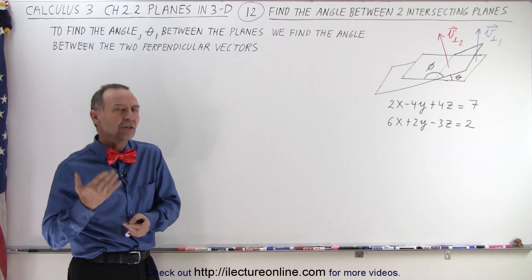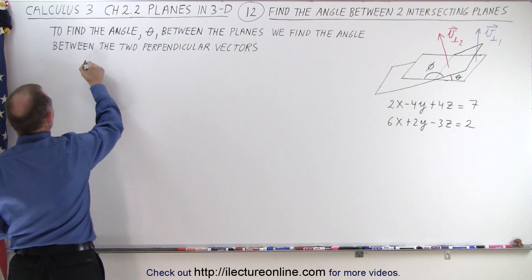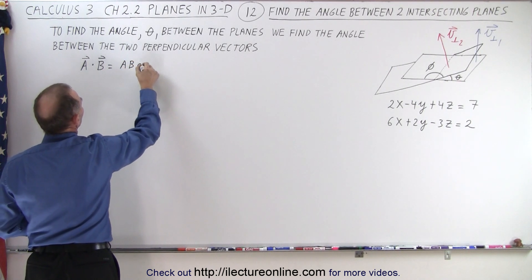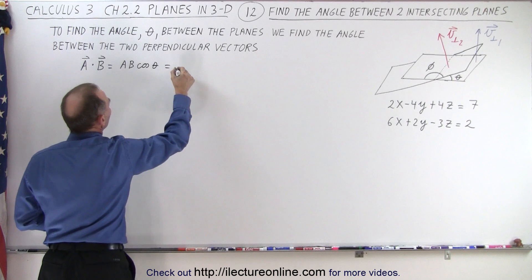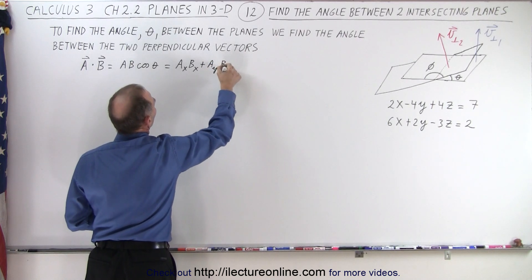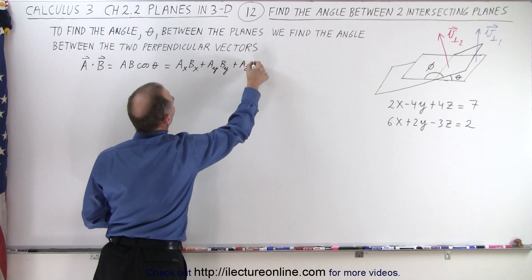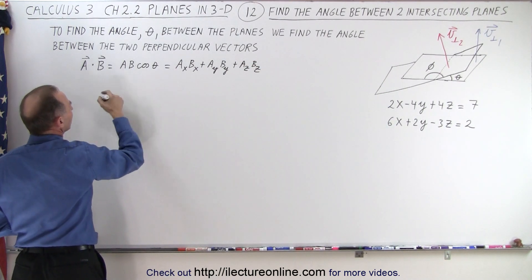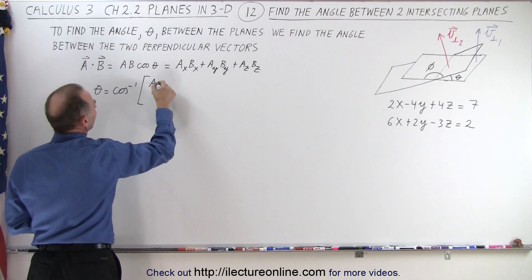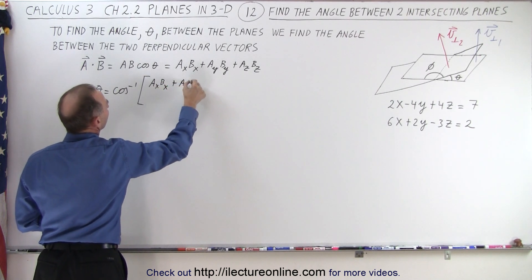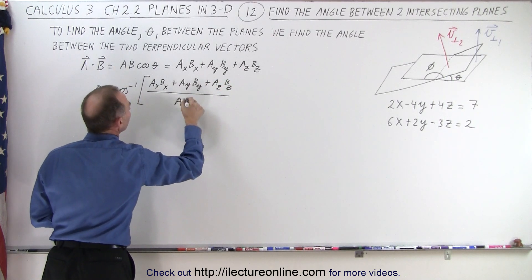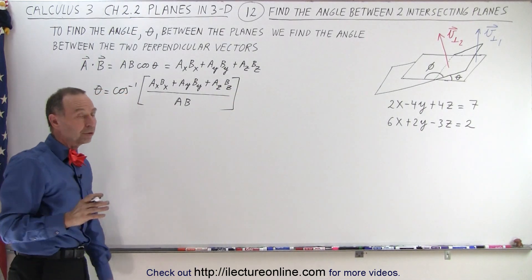We can do that by using the dot product. Remember that if we take the dot product between two vectors A and B, that is equal to the magnitude of A times the magnitude of B times the cosine of the angle between them. It's also equal to the product of the X components plus the product of the Y components plus the product of the Z components. So we can solve for theta: theta equals the inverse cosine of (AX·BX + AY·BY + AZ·BZ) all divided by the magnitude of A times the magnitude of B.